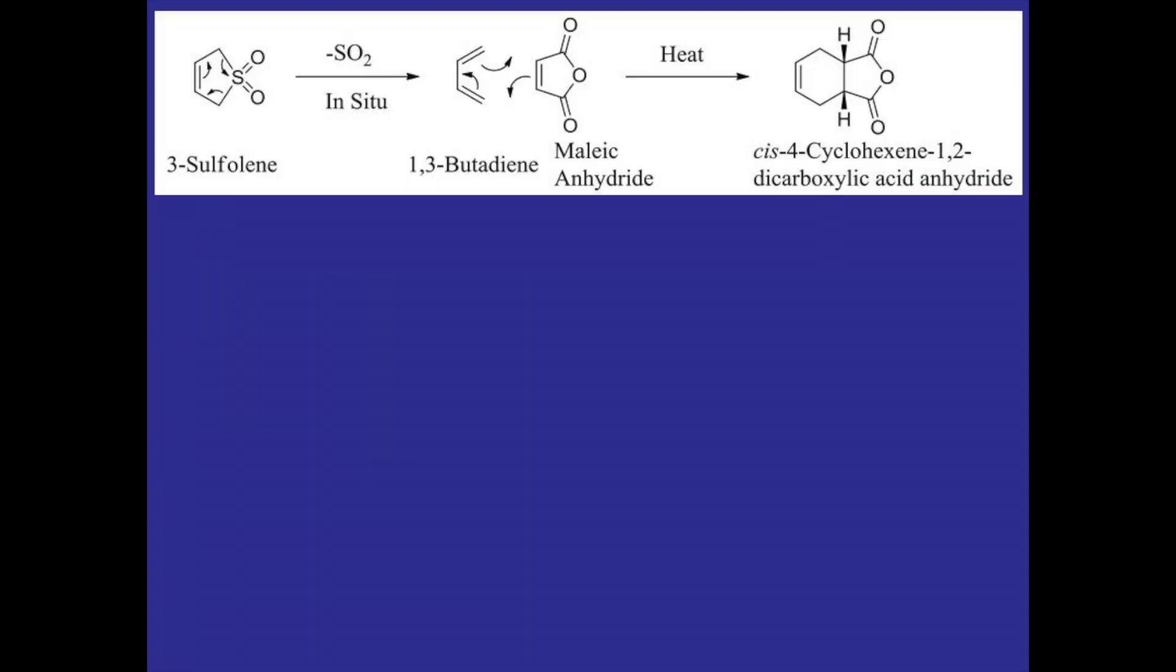So here's a look at the reaction that we'll be doing. It's a cycloaddition reaction using butadiene and maleic anhydride to form this cyclohexene anhydride product.